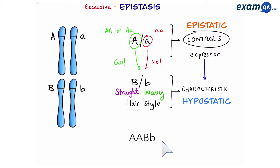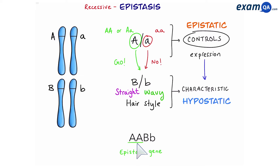Let's do another example. Say you have two big A's and big B small b. Again we start with the epistatic gene — overall this is dominant, which means go ahead to the next gene. Reading the next gene, that's also dominant overall, meaning again this person will have straight hair.